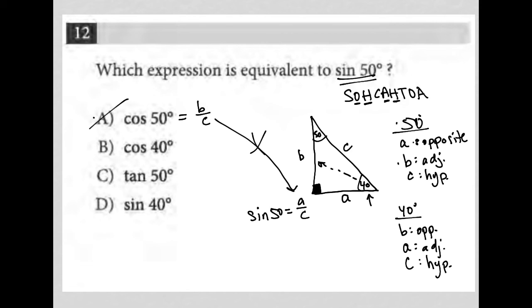Choice B is cosine of 40. Well, that takes us down here. So with respect to the 40-degree angle, the cosine is the adjacent. Adjacent for the 40-degree angle is A, and the hypotenuse is C.